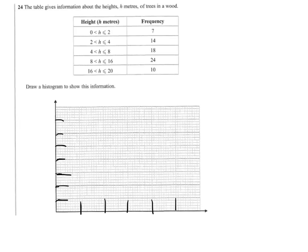So we've been given a table that gives information about heights, h meters, of trees in a wood. You can see there's 7 between 0 and 2, 14 from 2 up to 4 and so on. We've got to put the information into a histogram.